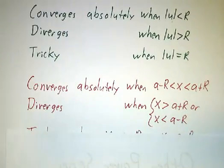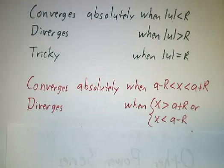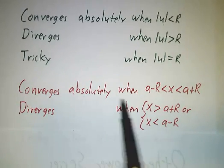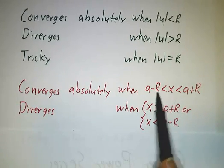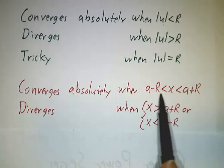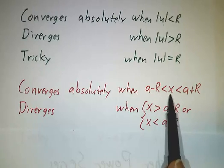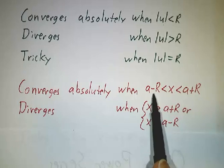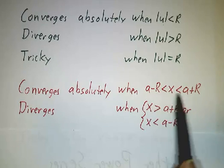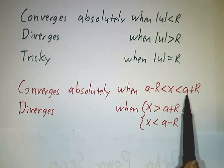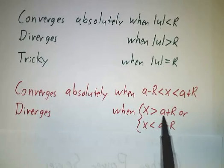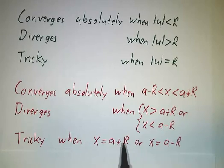So that means that in terms of x, it means it converges absolutely whenever you're within a distance r of a. Not within a distance r of 0, but within a distance r of a. When you're between a minus r and a plus r. It diverges when you're farther than r away from a. And it's tricky when you're exactly a distance r away from a.